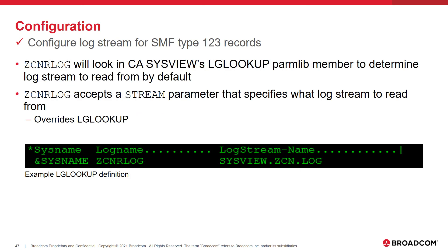Like other log type commands within CA SysView, ZCNRLog will read from CA SysView's LG lookup parm lab member to determine by default what log stream to read from. ZCNRLog also accepts a stream parameter that can override what LG lookup has coded. An example LG lookup definition is seen on the slide.